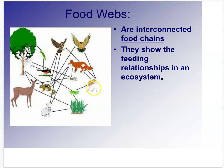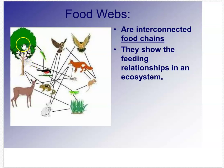All interconnected food chains are called food webs. The deer eats the grass, the fox eats the rabbit — it's all interconnected. The hawk eats the bird, the bird eats the grasshopper, the grasshopper eats the tree, and the tree gets its energy from the Sun. The animals at the top are called top consumers — they're at the top of the food chain.